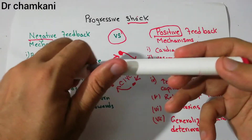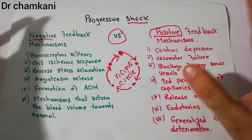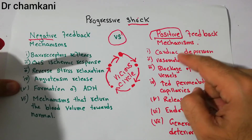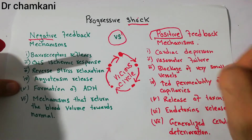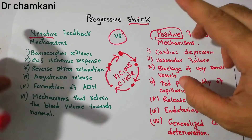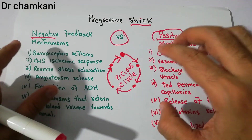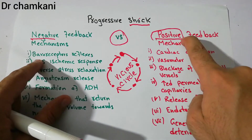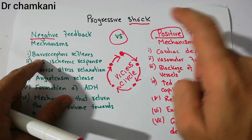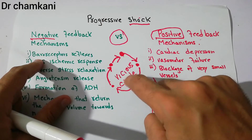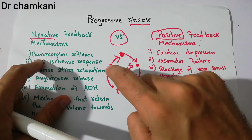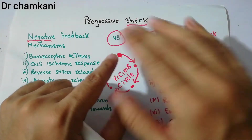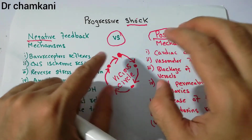Ultimately, whether a shock will revert to the non-progressive stage and the patient will become normal, or whether the shock will progress towards the irreversible stage and the patient will die, depends on the severity of the shock and the balance between the positive and negative feedback mechanisms. If the positive feedback mechanisms are stronger, the patient enters the vicious cycle and will die; if the negative feedback mechanisms are stronger, the patient will recover.